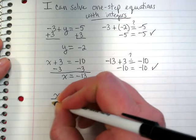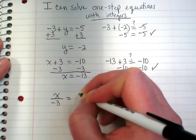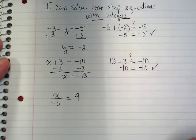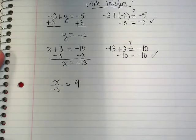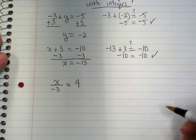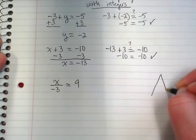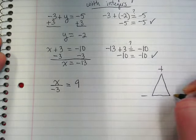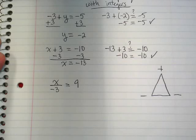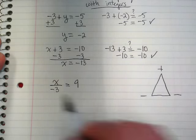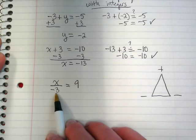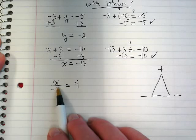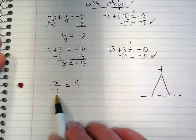x divided by negative 3 equals 9. As soon as we see that we have a multiplication or division problem, I should see this triangle showing up in your pages. If I see division, go ahead and look up above. If I see division, what should I be doing to solve? Multiplication. Good.